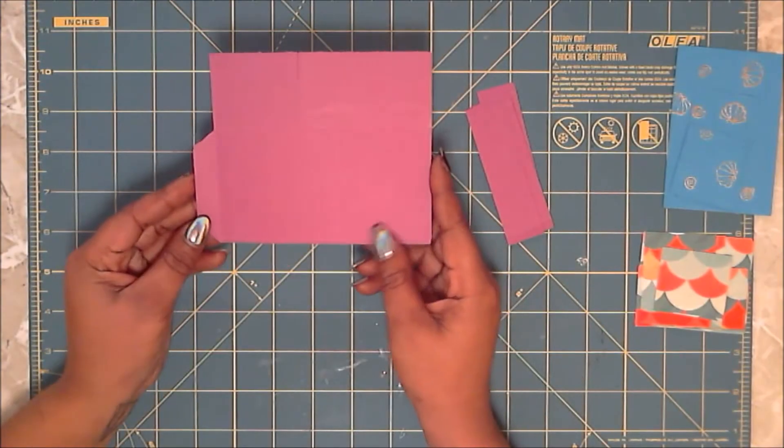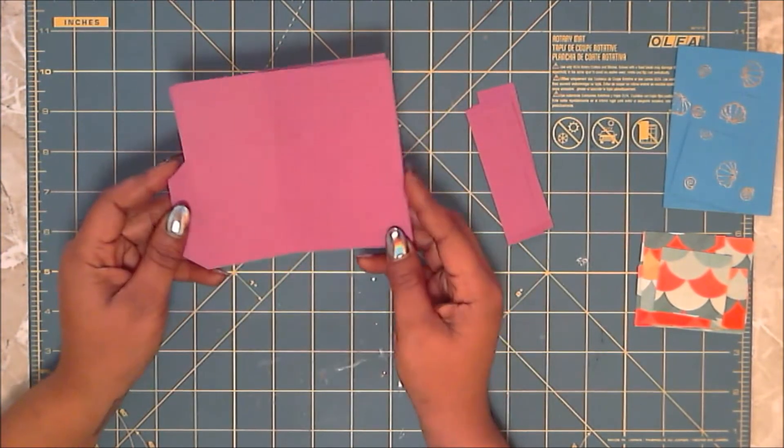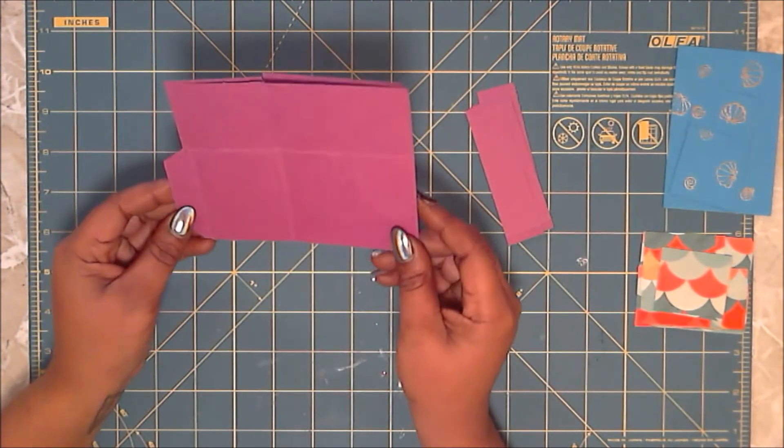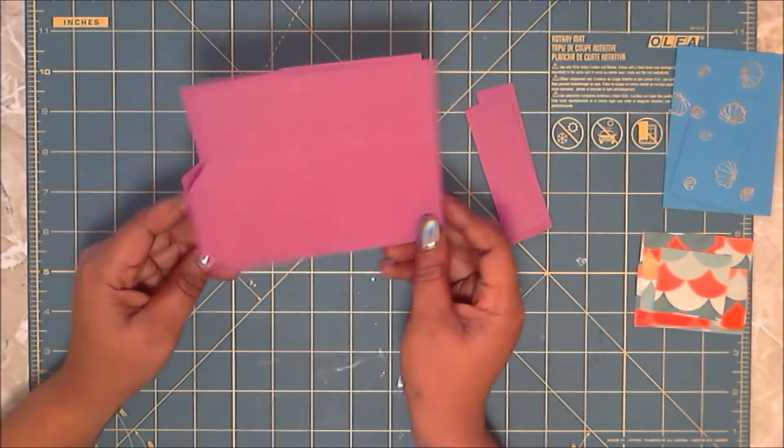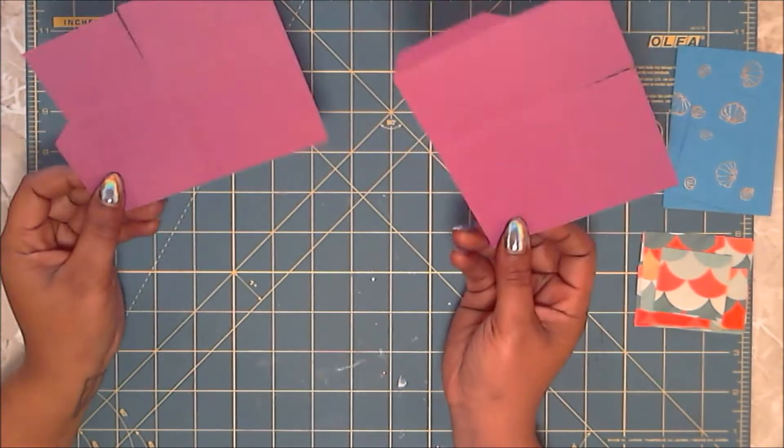I have already prepared my card stock to create the pop-up box, and the first measurements that you are going to need are two pieces of card stock, both measuring at four and a quarter by five and a half.